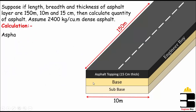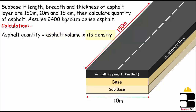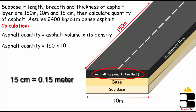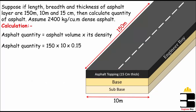Our approach is to calculate the quantity of asphalt, which must be the asphalt volume times its density. The asphalt layer is just like a rectangular prism, so the volume of the asphalt layer must be the multiplication of its three dimensions: 150 meters times 10 meters times the thickness of 15 centimeters, or 0.15 meters.